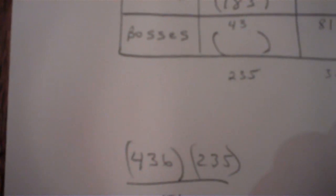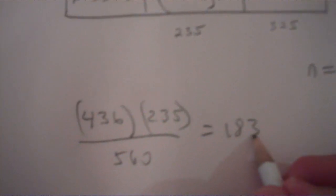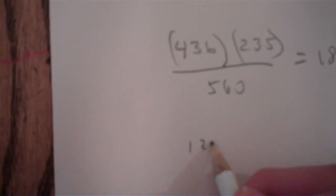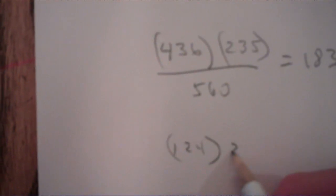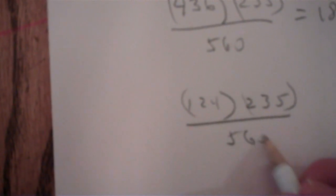And then we're going to do this next one here, take that row total. Let me write here 183. Okay, we're going to take this row total of 124 times this column total, 235, all divided by 560.